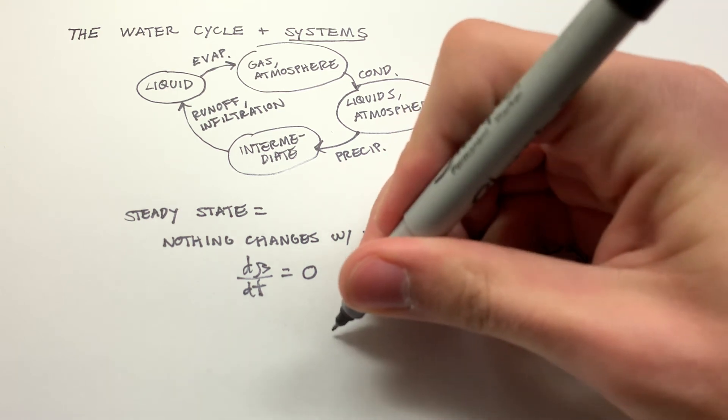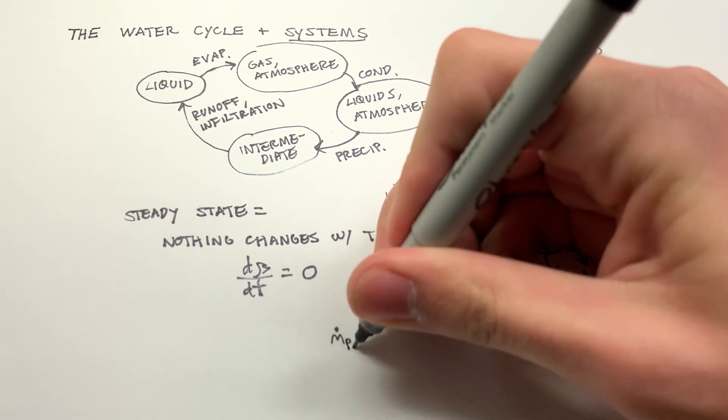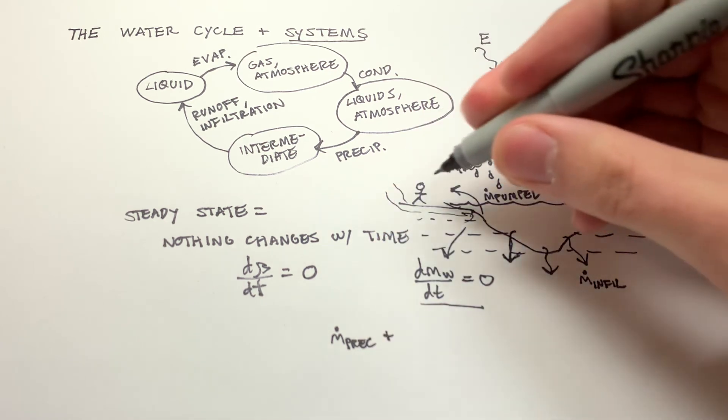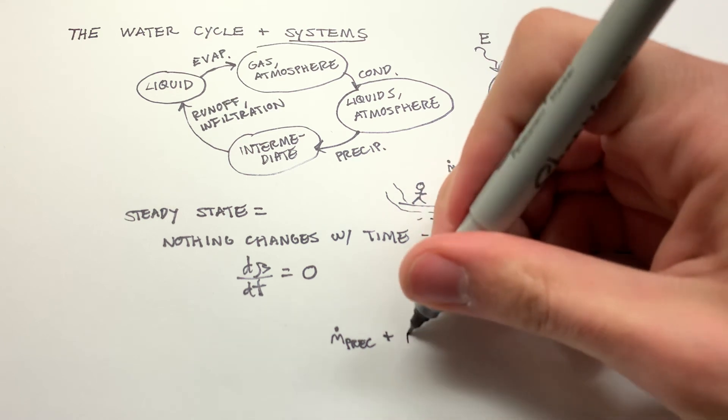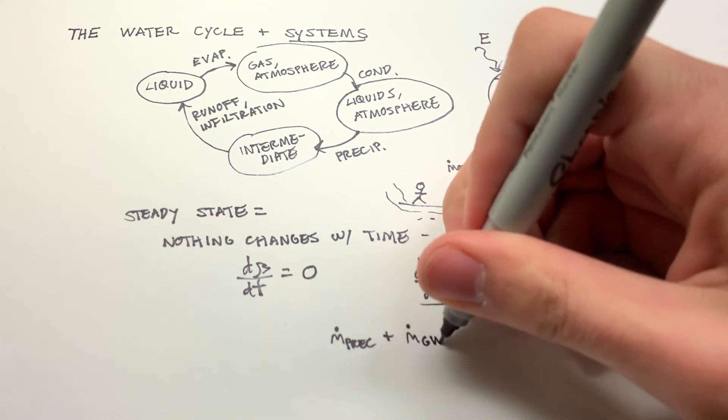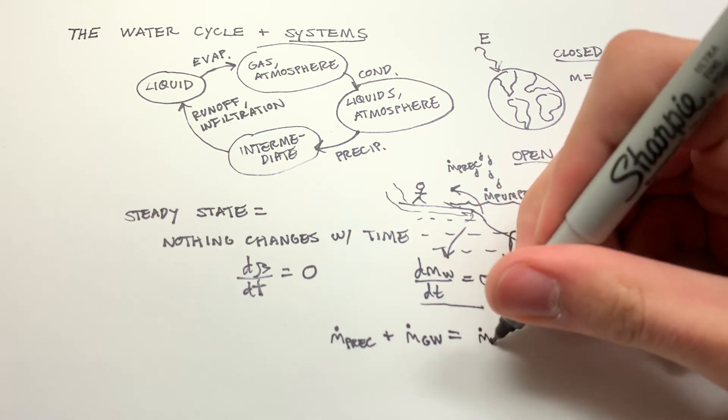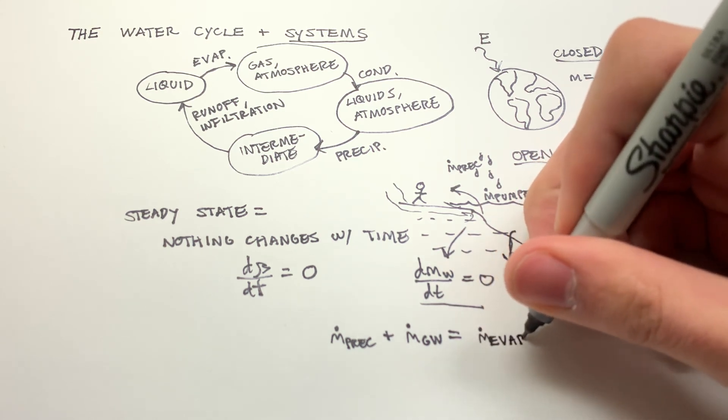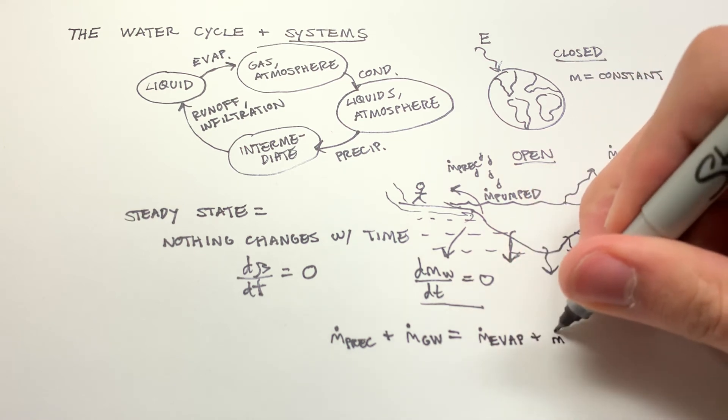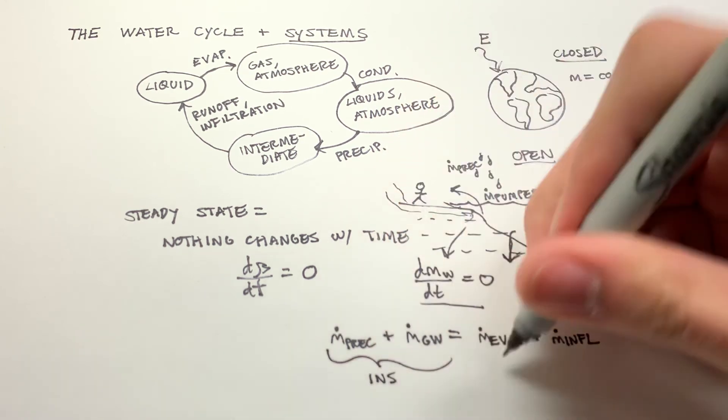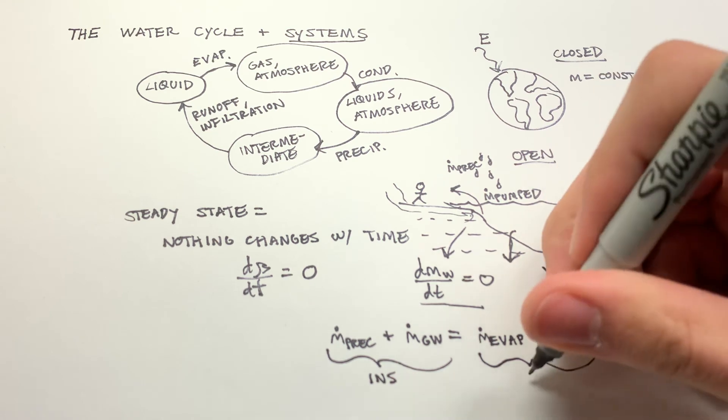Then we would say the mass flow rate from precipitation plus the mass flow rate coming in from the ground, call that m.gw, must be equal to the stuff going out in order for that water level to not change. So m.evaporation plus m.infiltration. These are ins and these are outs.